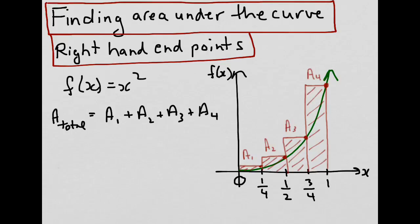Now let's figure out the values of the right-hand endpoints. We know that the rightmost point has x equal to 1. Substituting into our function, x squared gives us 1 squared which equals 1. So the right-hand endpoint for the fourth rectangle is (1, 1). Similarly, the right-hand endpoint for rectangle 3 would be x equals three quarters. Substituting that into the function, we'd end up with 9 sixteenths.